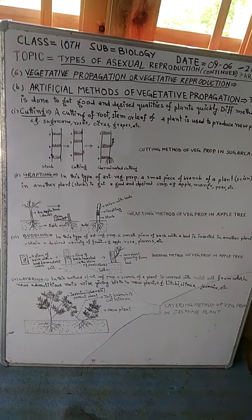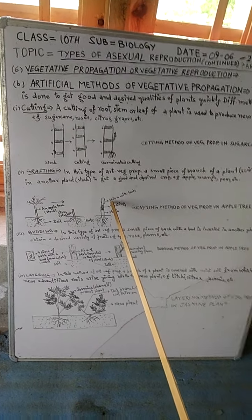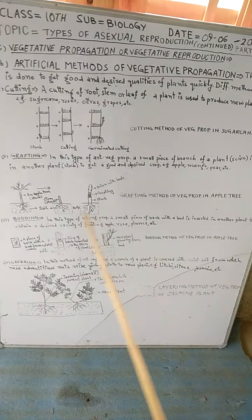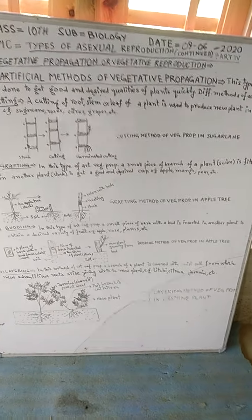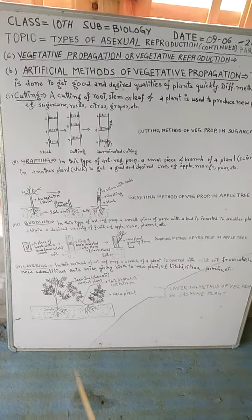it forms shoot, so the new variety arises from this plant in case of apple plant. This is grafting, the grafting method of vegetative propagation in apple tree. Then the third is budding.